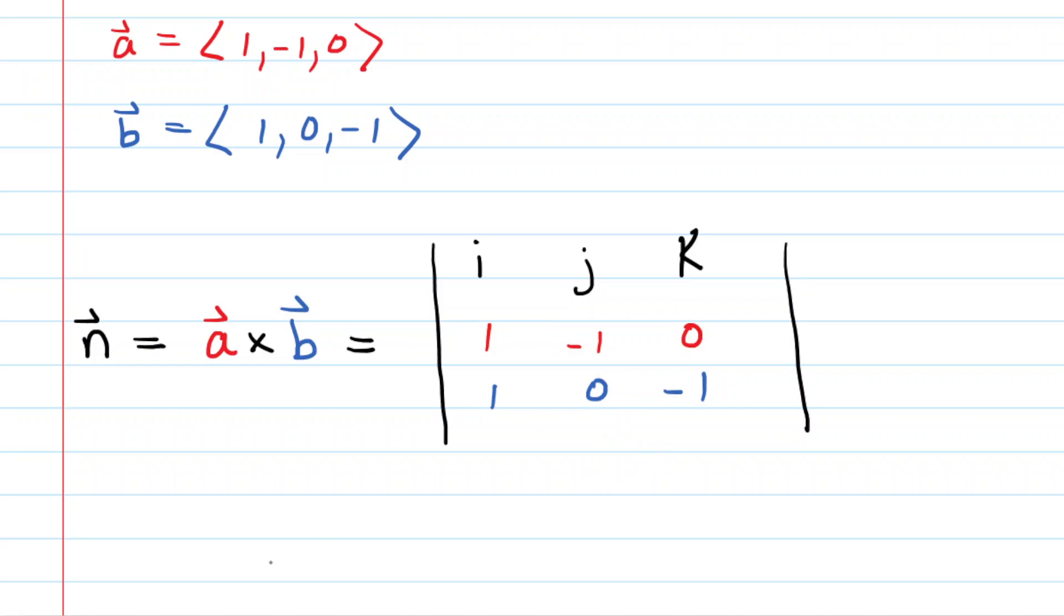And now to actually compute the cross product, we're going to do something very carefully here. We're going to cover up the first column, so the i column. And then we're going to actually compute a 2 by 2 determinant, which just means that we cross multiply. We multiply those two numbers to give us positive 1. We multiply those two numbers to give us 0. And then we subtract that result. So we'll simplify that in a minute.